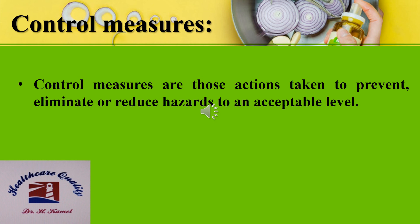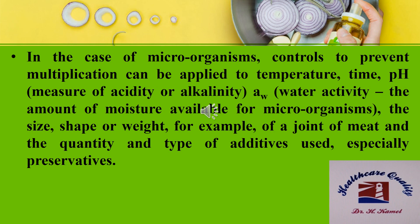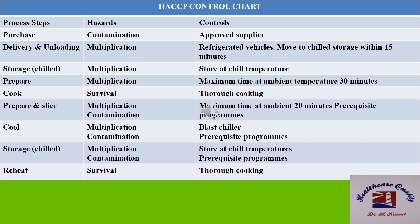Control measures are those actions taken to prevent, eliminate, or reduce hazards to an acceptable level. In the case of microorganisms, controls to prevent multiplication can be applied to temperature, time, pH, water activity, the size, shape, or weight — for example, of a joint of meat — and the quantity and type of additives used, especially preservatives. In the chart, we add controls to the hazards for each step in food processing.